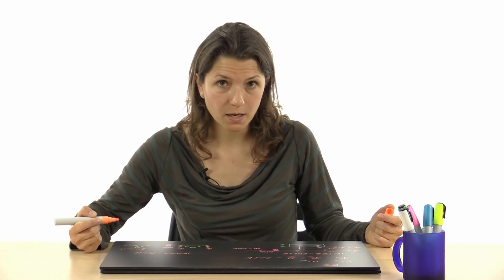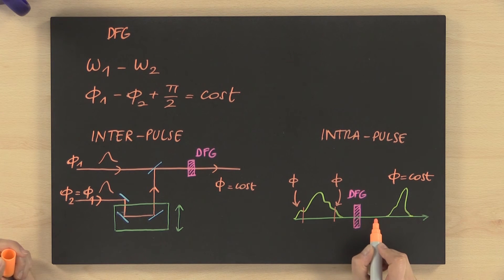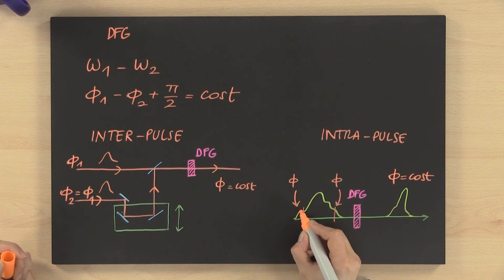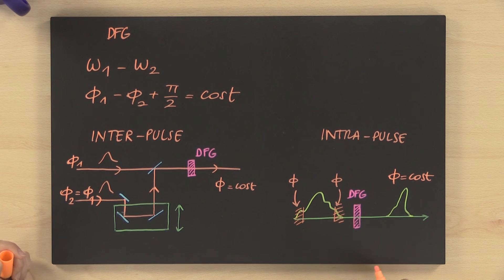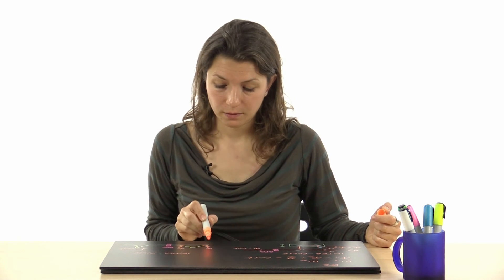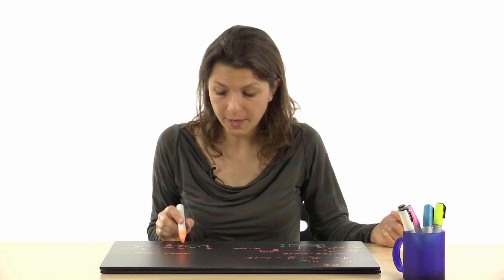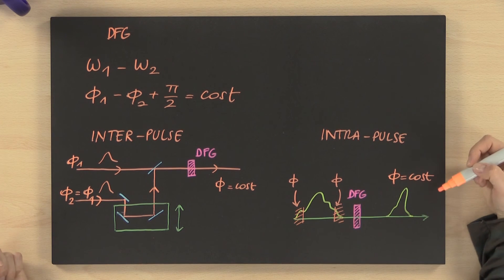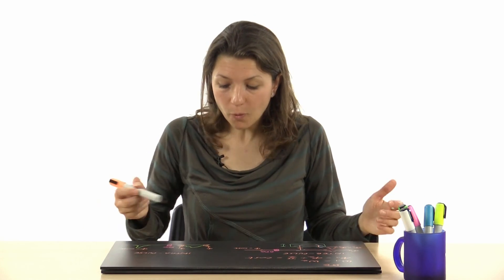Another possible approach is intra-pulse difference frequency generation. In this case, one exploits a broadband pulse and performs difference frequency generation between the short wavelength tail and the long wavelength tail of the optical pulse. This way, the two portions of the spectrum obviously share the same carrier envelope phase, and the output pulse has a constant carrier envelope phase. This approach is very robust since there is no jitter induced by a delay line between the two pulses.